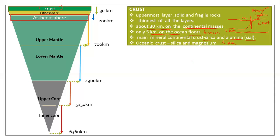Next there is the asthenosphere. The asthenosphere is a melt area made of a little crust part and a little mantle part. Some parts are your lithosphere and some parts are your upper mantle. This zone is a melted, mobile area just below the upper crust.